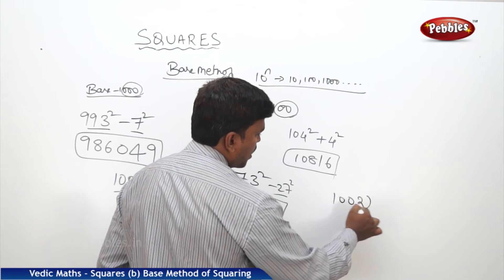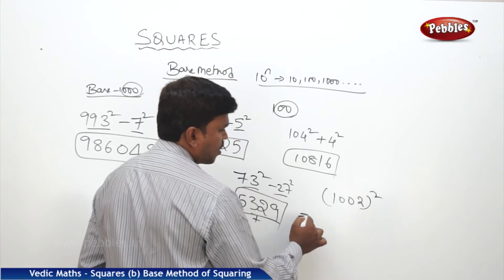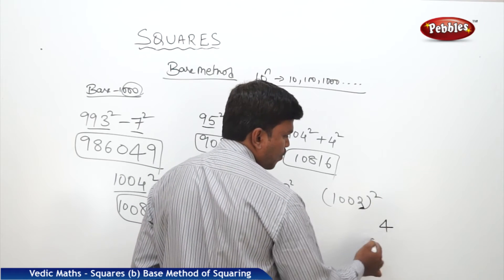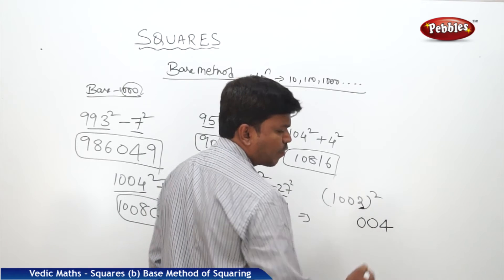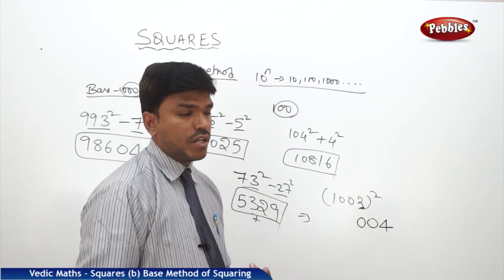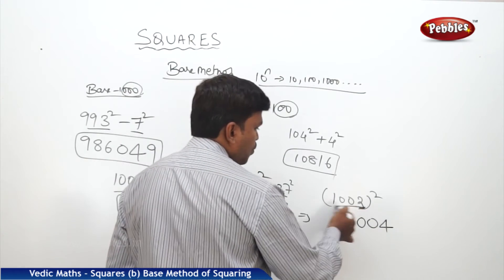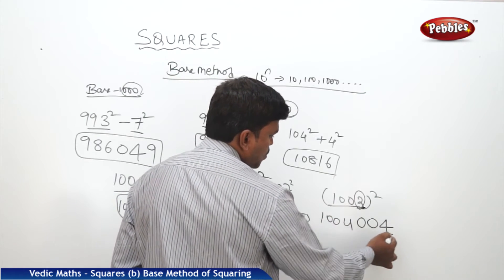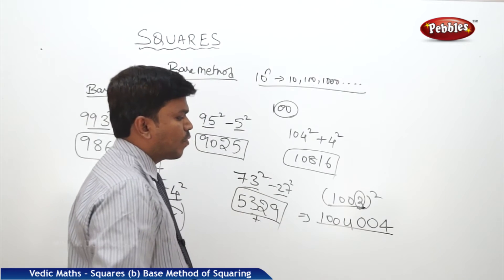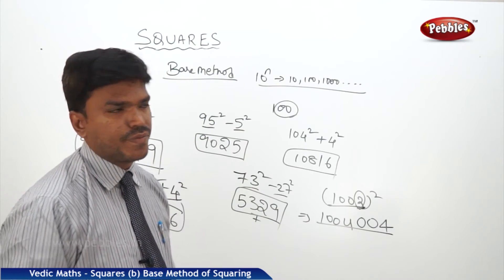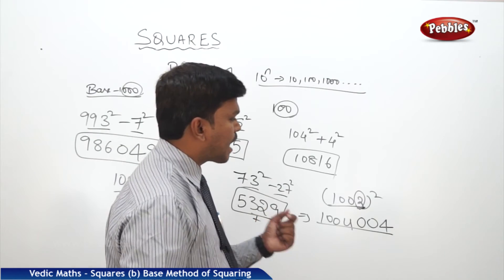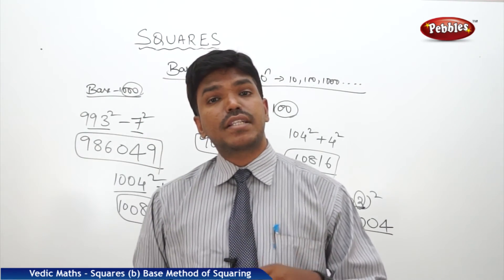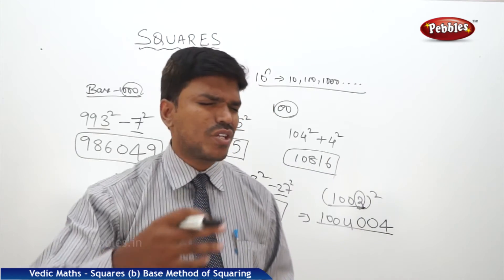One more example: 1002 squared. It is 2 more than 1000. What is 2 squared? 4, but we write 004 to make it 3 digits. Now 1002 plus 2 is 1004. So your answer is 1004004. Like this we can calculate squares of numbers near to base 1000.